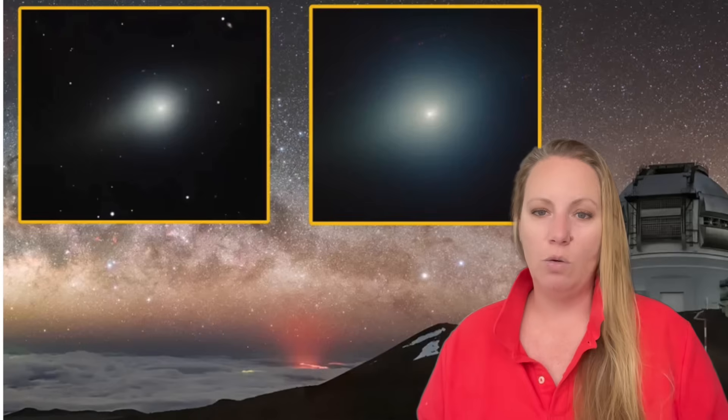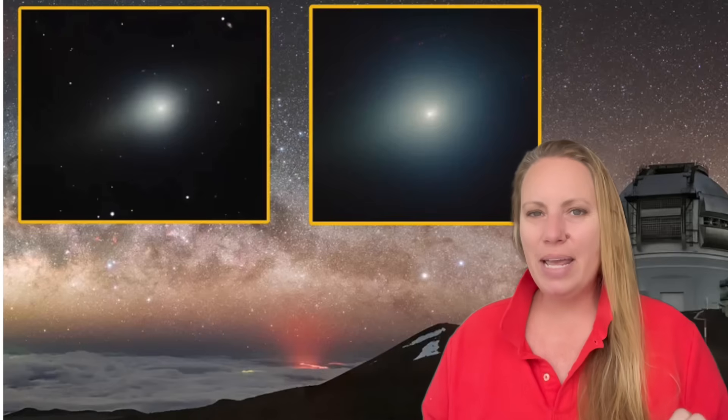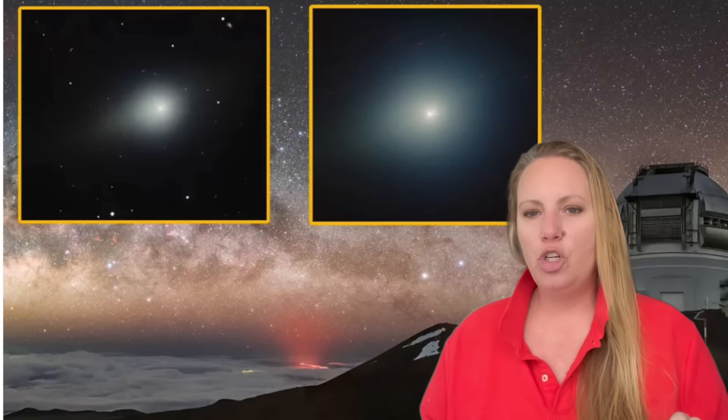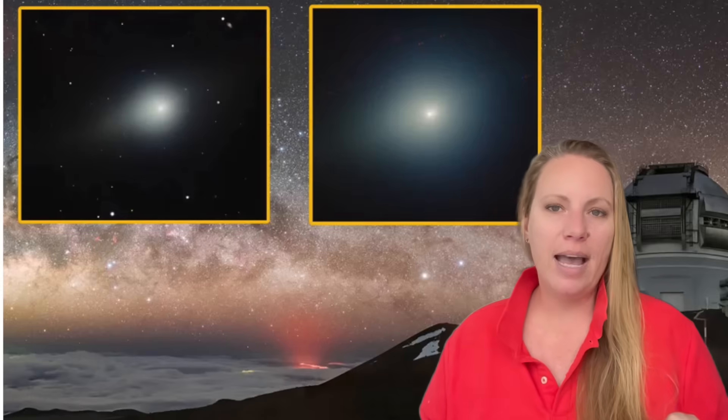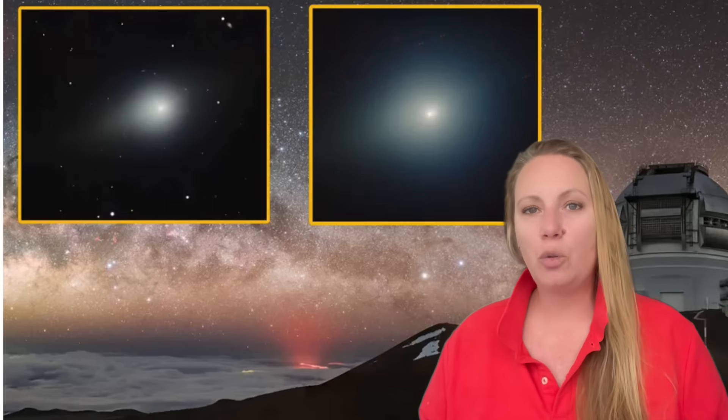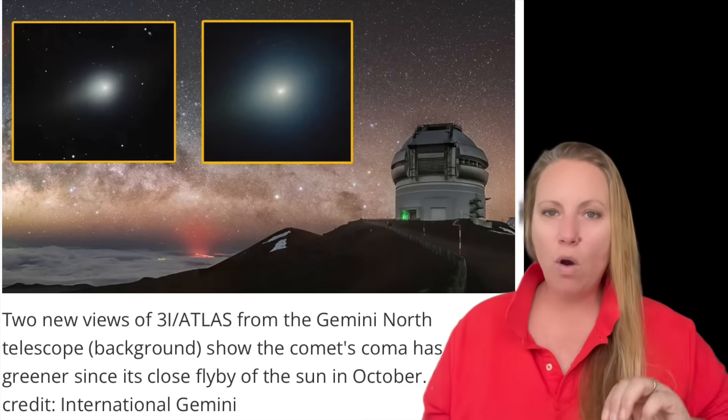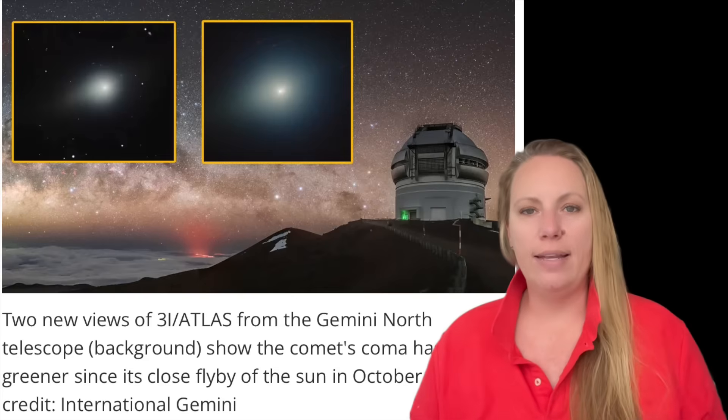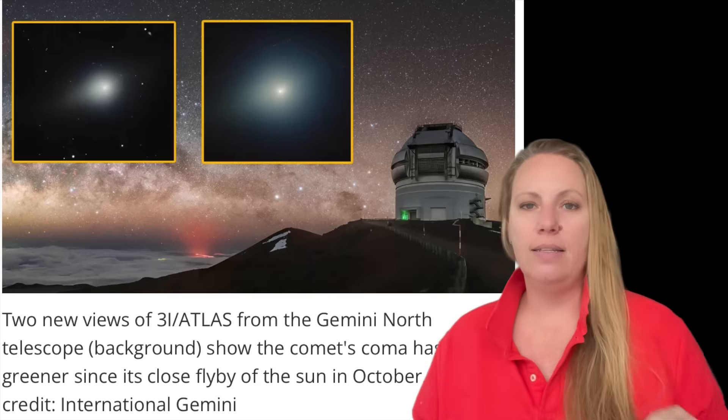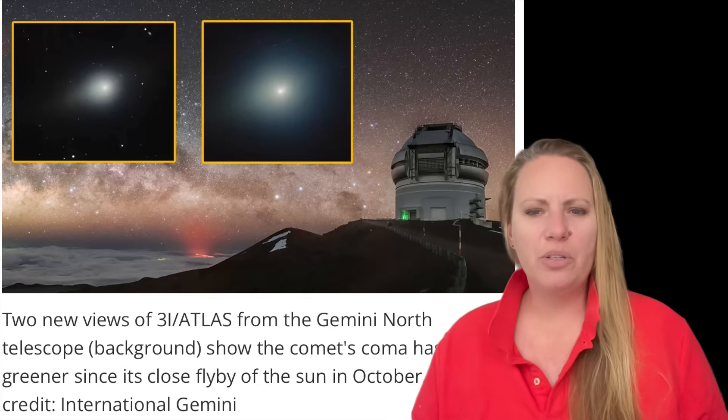The earlier image showed something different. The glow around 3i Atlas was red, not green. Before it passed the sun, the gas plume looked red. After it passed the sun, the gas plume looked green.